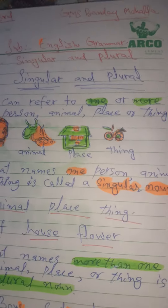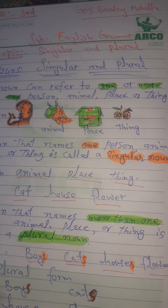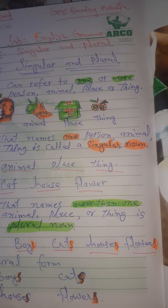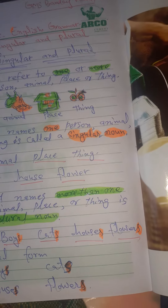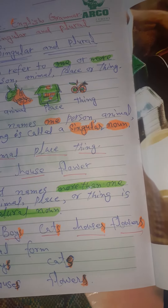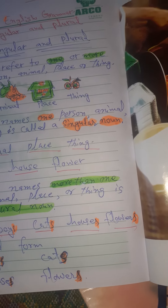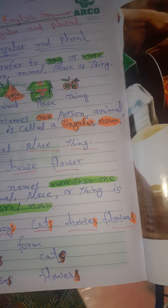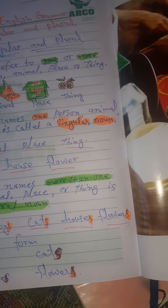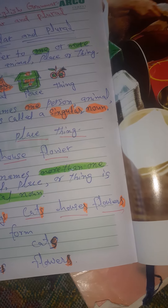Person, animal, place, thing. A noun that names one person, animal, place, or thing is called a singular noun. For example: boy, cat, house, flower. A noun that names more than one person, animal, place, or thing is called a plural noun.